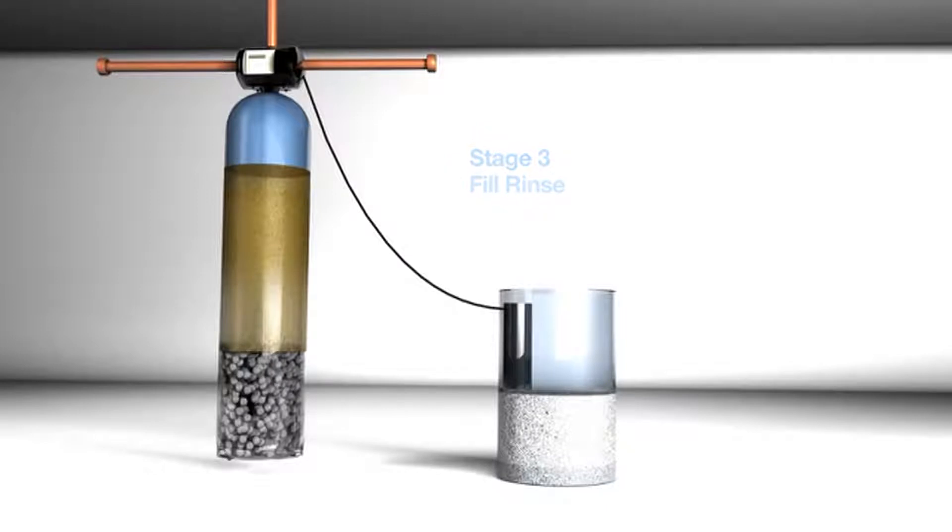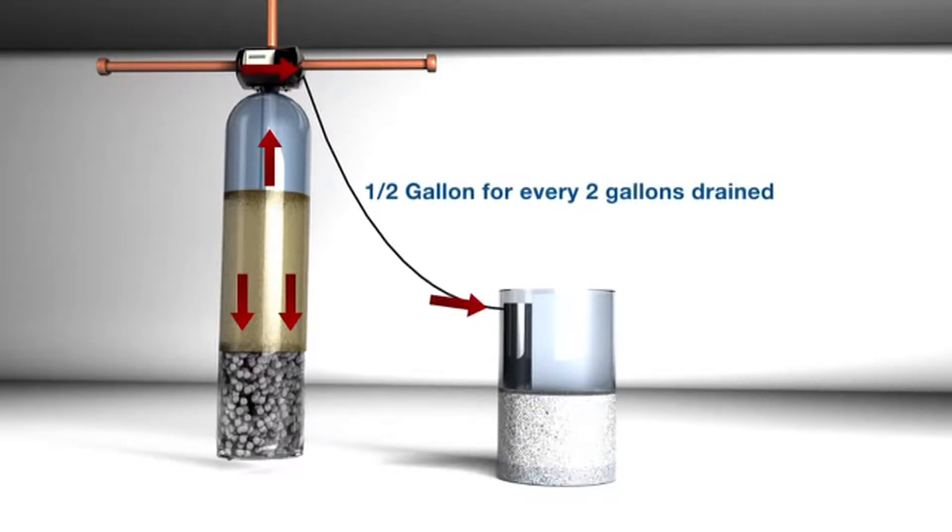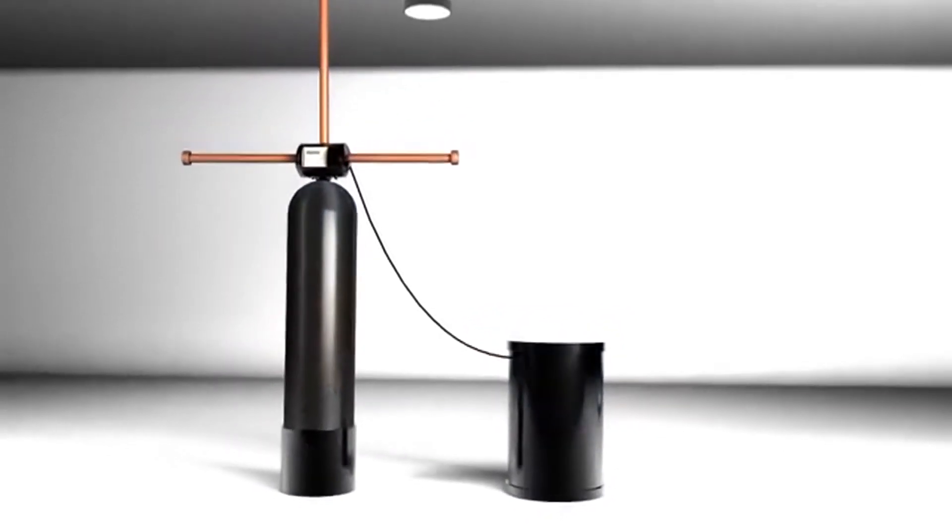Since our resin bed is still expanded, we will need to compress the bed back down. As water comes in and passes down through the resin, the bed is compressed and the resin is rinsed simultaneously. While this is happening, we are also sending water down the fill tube to replenish the brine tank. On a 1.5 cubic foot system, this process takes 9 minutes. For every 2 gallons of water that goes to drain, a half gallon will go to the brine tank. This completes the process of regeneration and gets the brine tank prepared to regenerate the resin in the future.